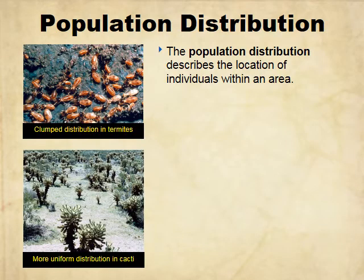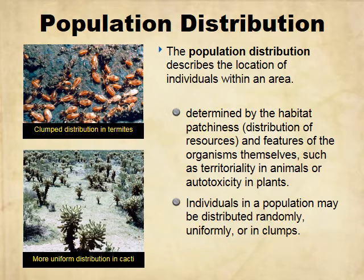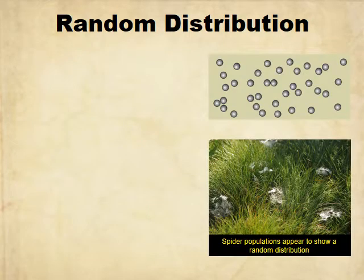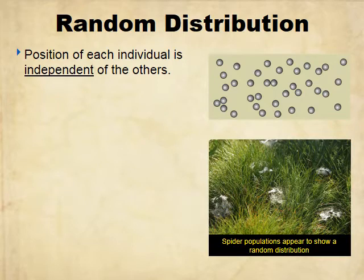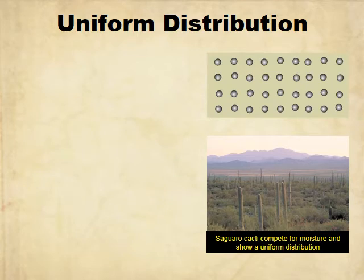Distribution is where in an area the population is. It's determined by habitat, resource availability, the amount of territoriality in animals, or even autotoxicity in plants. Distribution can be random, uniform, or in clumps. When things are randomly distributed, each individual is usually independent of each other. Random distribution isn't super common — spiders, clams, and some trees are randomly distributed.